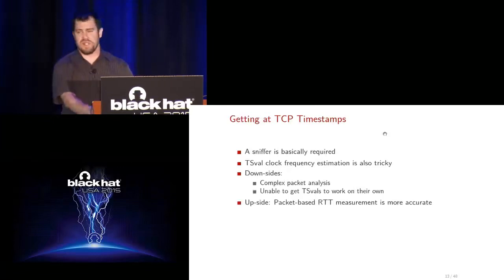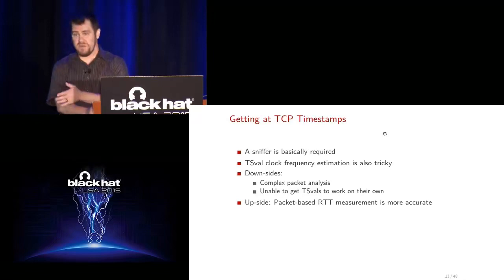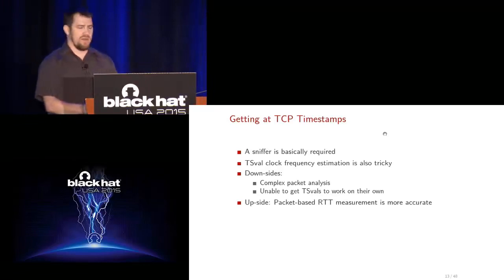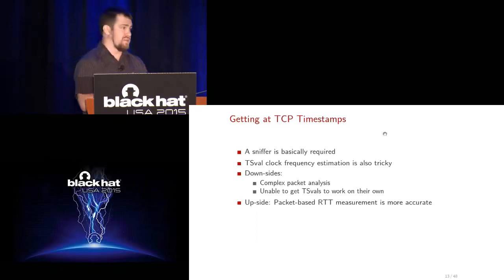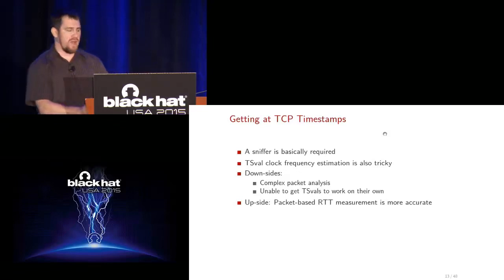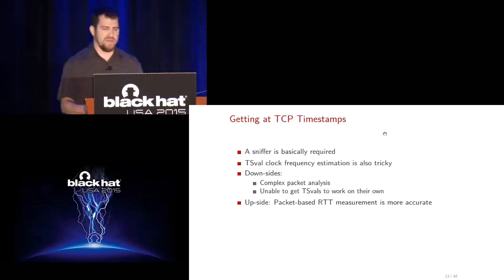To get at TCP timestamps you pretty much have to use a sniffer — you have to observe packets directly because TCP stacks don't expose this to user-space applications. It's also fairly tricky because the clock frequency for TCP timestamps varies from one operating system to another. We have to measure that clock frequency. This forces us to analyze data at a packet level and work out complex issues like retransmissions, dropped packets, and out-of-order packets. At the end of the day, after working with TCP timestamps for quite a while, we weren't able to use them directly to measure timing differences with any real accuracy.